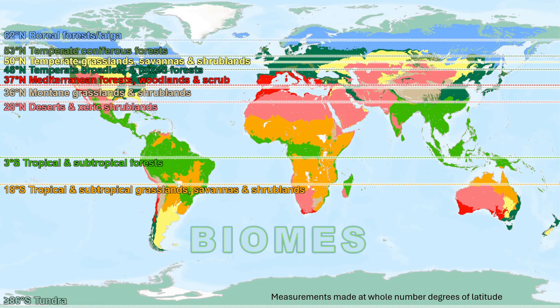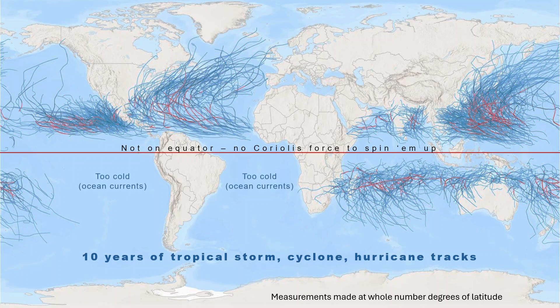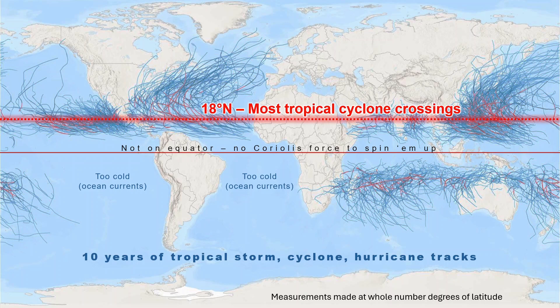How about some natural disasters? Tropical cyclones clearly have a strong latitude-based pattern, starting with formation over warm tropical waters. They don't form on the equator, where there isn't the needed spin from Coriolis deflection. There's also the lack of tropical cyclones over the southeast Pacific and south Atlantic oceans, where waters are too cold. Their paths tend to follow low-latitude easterlies before hooking into mid-latitude westerlies. The parallel of most tropical cyclone track crossings is 18 degrees north.